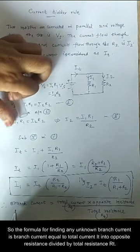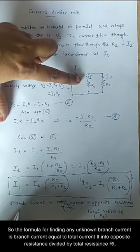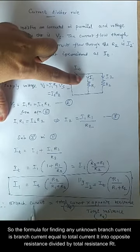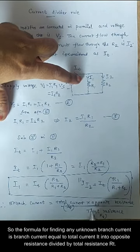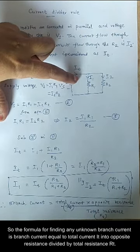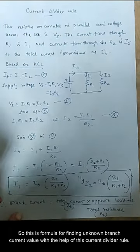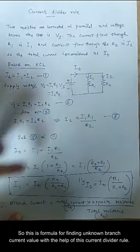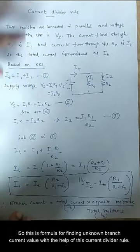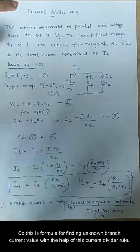The formula for finding any unknown branch current is: branch current equals total current multiplied by the opposite resistance, divided by total resistance. This is the formula for finding an unknown branch current using the current divider rule. Thank you.